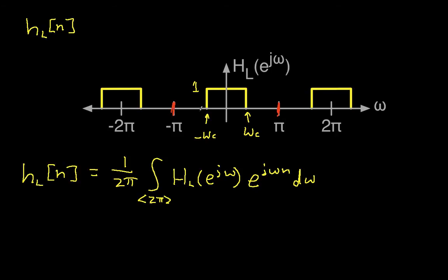Now you'll notice from minus pi to minus omega c, H will be equal to 0, so there'll be no contribution to the integral. Similarly from omega c to pi, there'll be no contribution. From minus omega c to omega c, HL is equal to 1. So we can write this as 1 over 2 pi, the integral from minus omega c to omega c, e to the j omega n d omega.